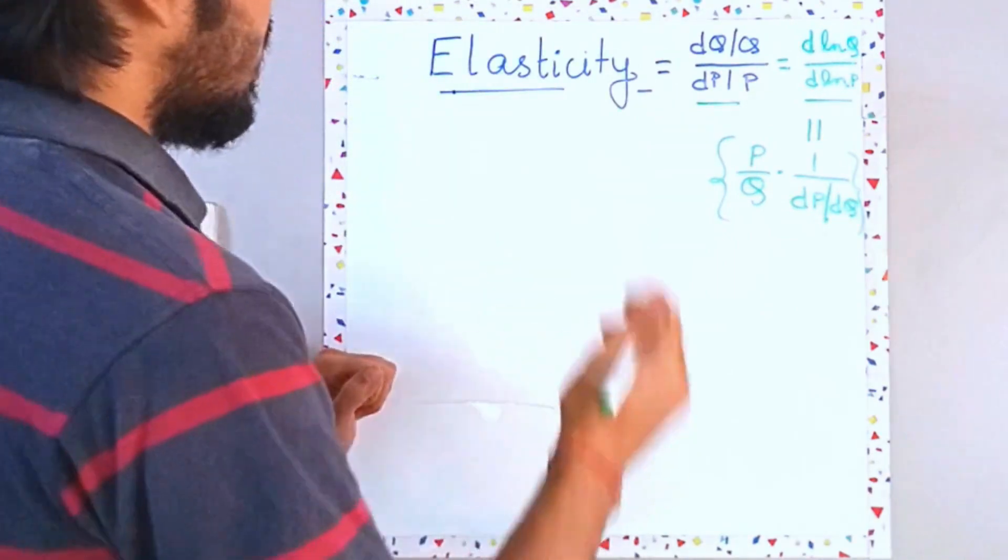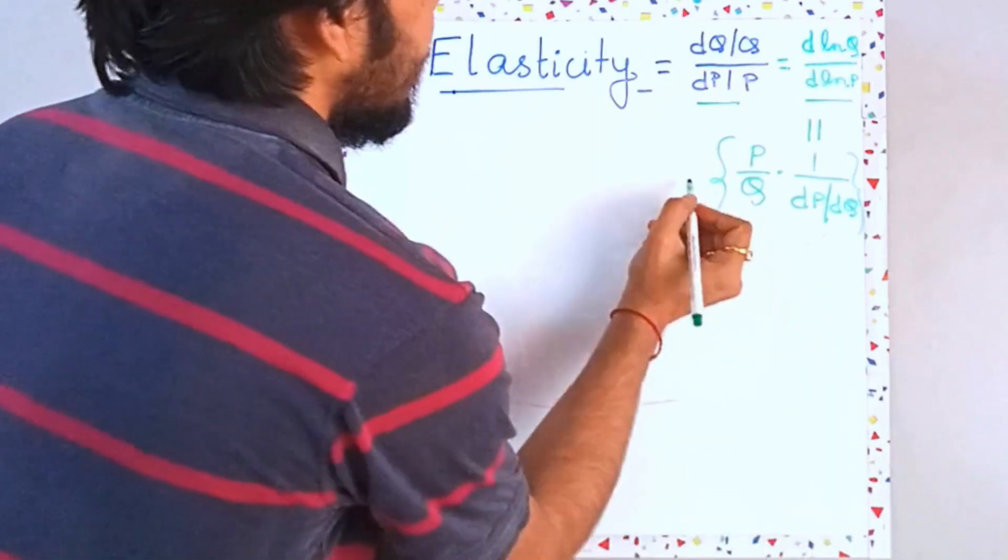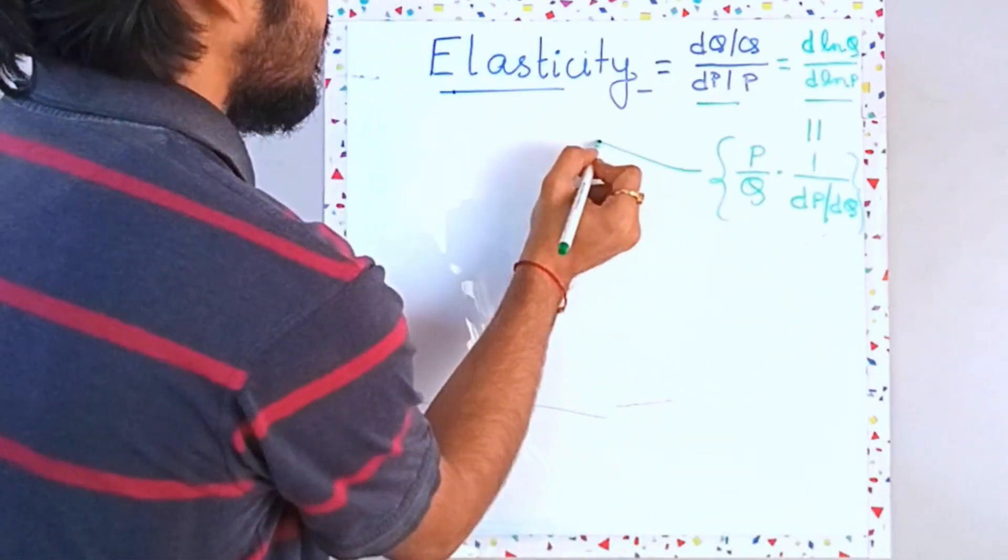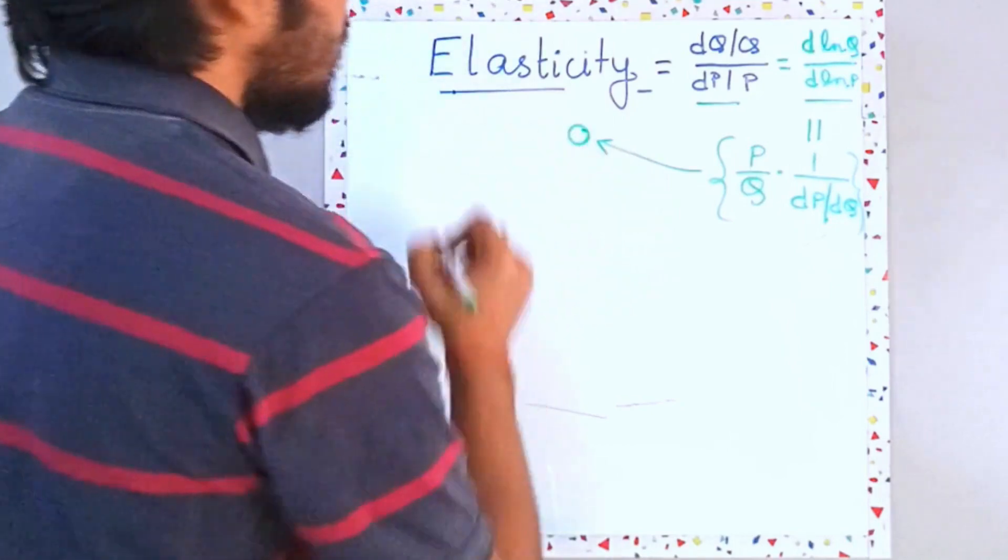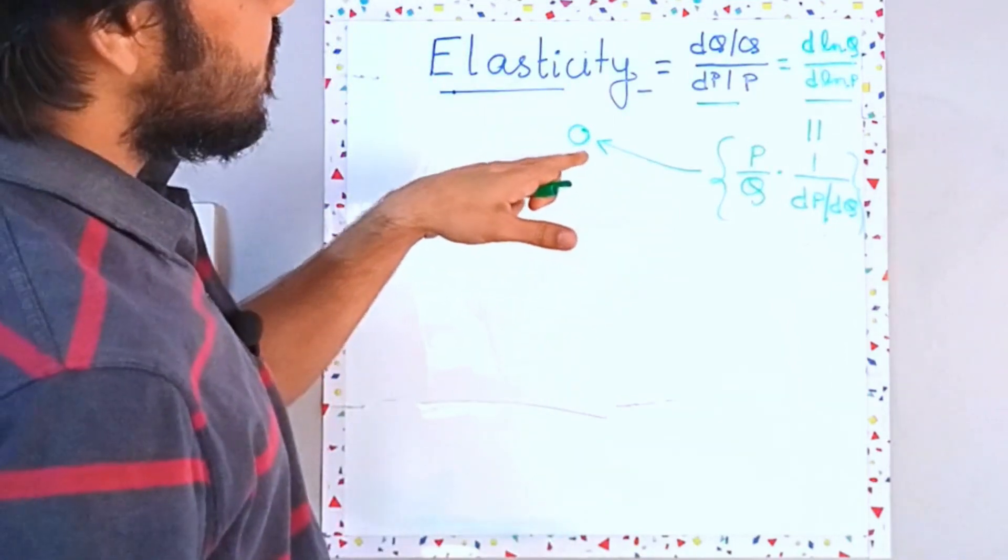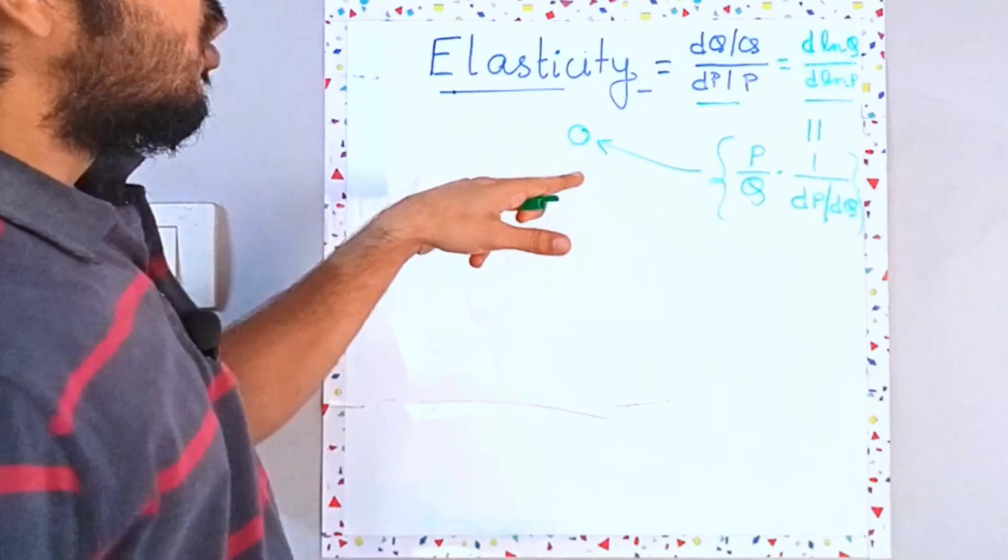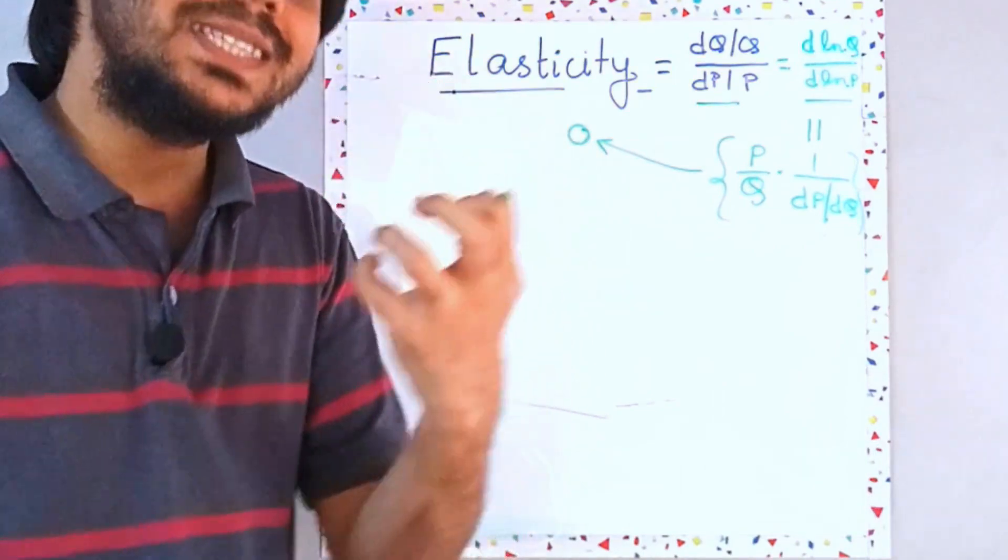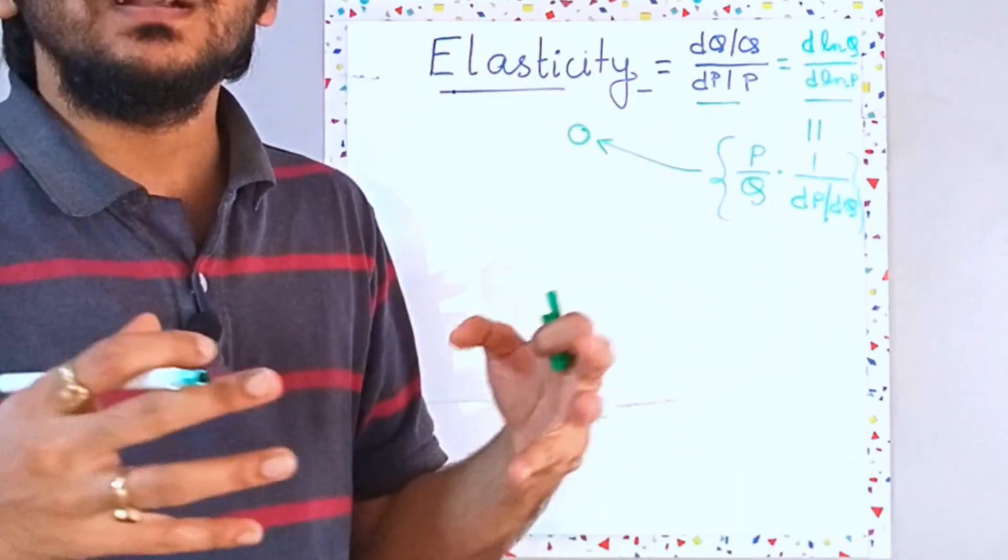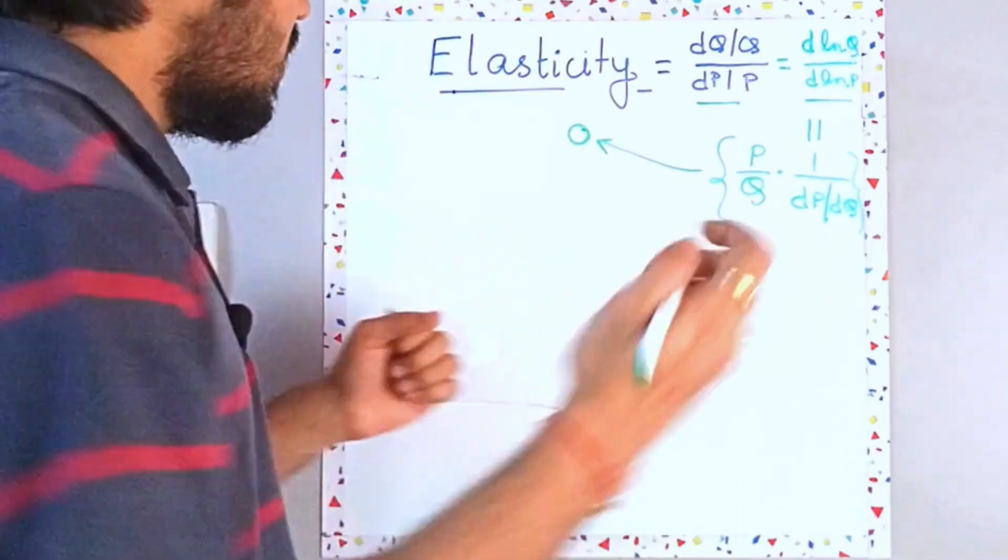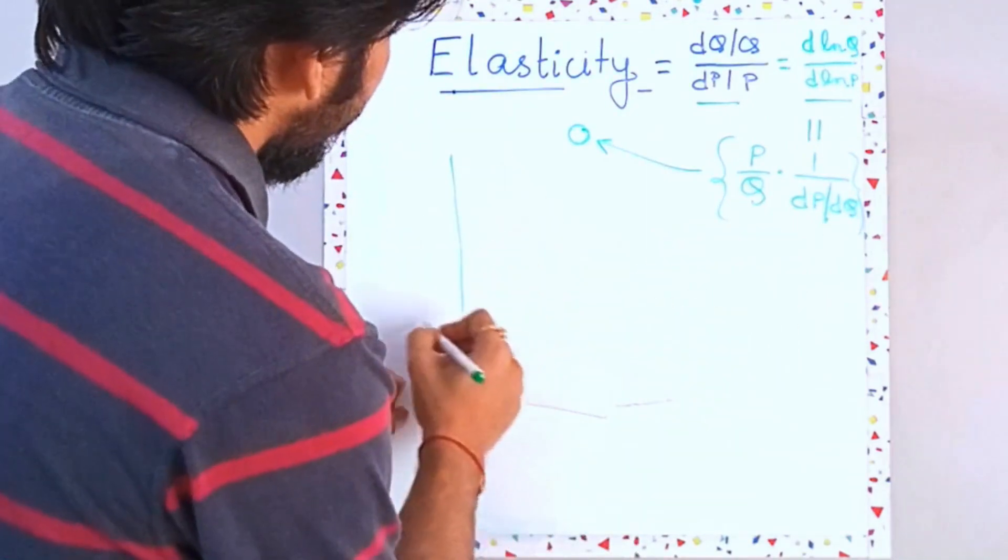So let's try to understand the case when this guy will become zero. When will this become zero? This will become zero when your price elasticity is zero, which means that you are not changing your demand based on the change in price. When will that happen? Think about it.